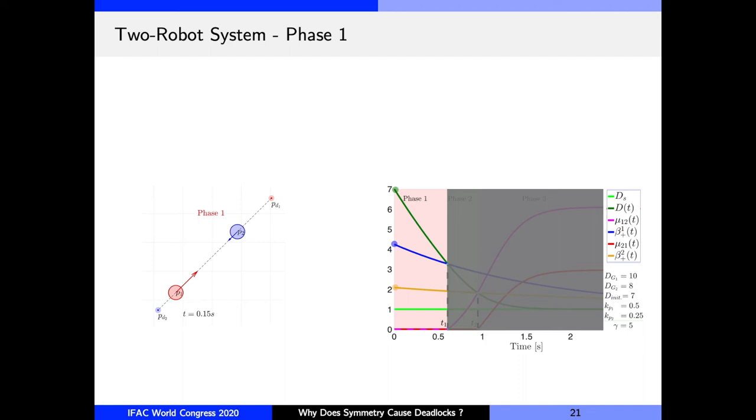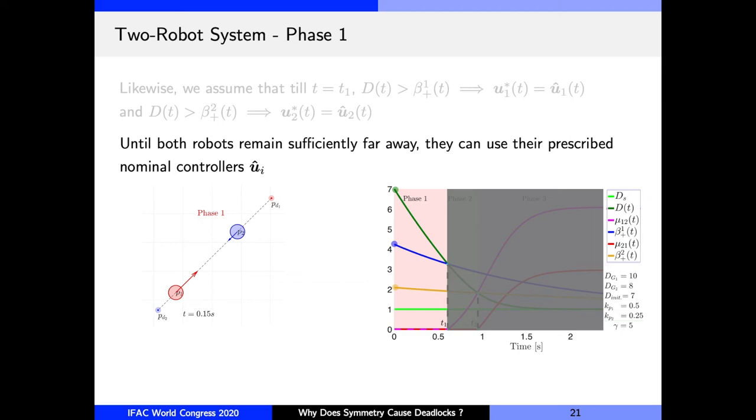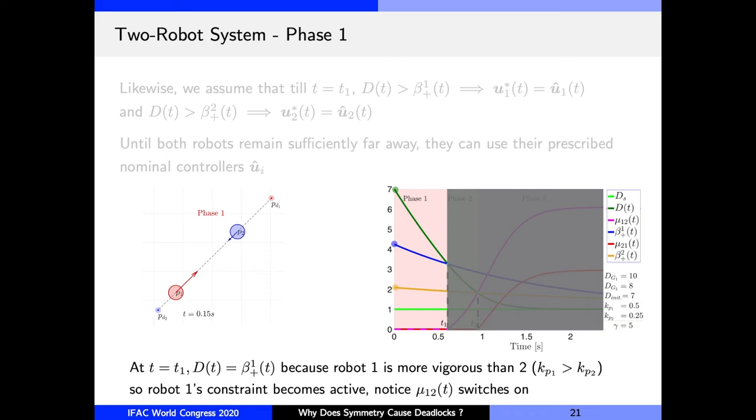So now we can assume that this pattern continues for some time, that is d remains greater than both β_1 and β_2, right? The curve of t is above the curve of β_1 and β_2 in this graph. Therefore the robots continue to use their nominal controllers. However, eventually at time t_1, d(t) becomes equal to β_1(t). And that's because robot one had a higher proportional gain than robot two. So what happens is that the constraint of robot one becomes active and u_1^cap ceases to be feasible. This marks the beginning of phase two.